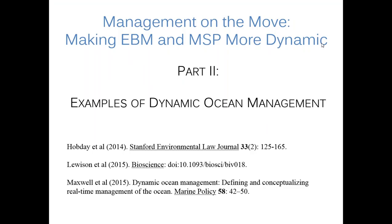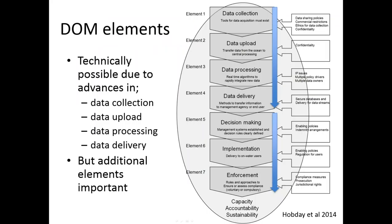Good morning everyone. The lessons I'll share are from three papers available later in the presentation. There are seven elements you need to have in place in order to do dynamic ocean management. The first four are technical: getting the data, uploading it, processing it, and delivering it back to an end user. The three additional elements that are really important — and if you neglect them your dynamic management approach may not work — are decision making, how it's implemented (voluntary or compulsory), and enforcement of that dynamic management solution.